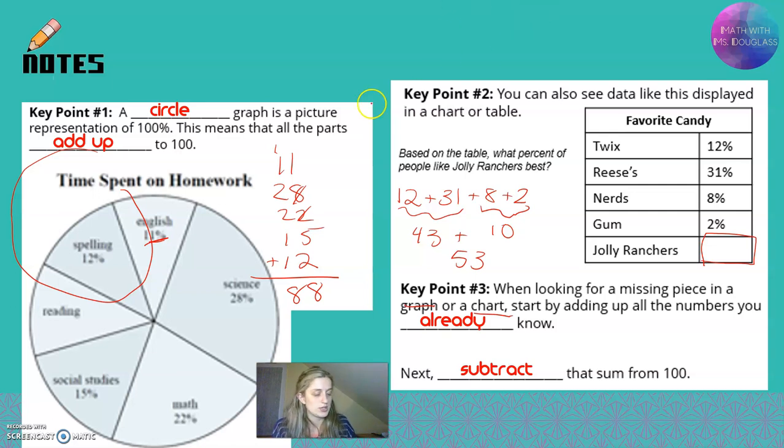So you would say 100 minus 53 is gonna equal 47% of people voted for Jolly Ranchers. And 100 minus 88 is gonna equal 12% of people, well not 12% of people, 12% of your time, because that's what the title tells me, that you spent on reading homework. And that's how you solve for missing part in a circle graph or a chart.